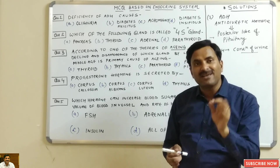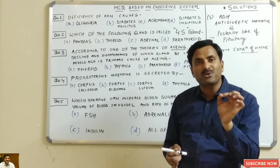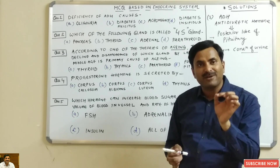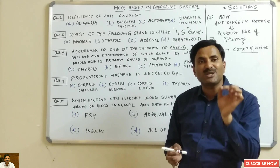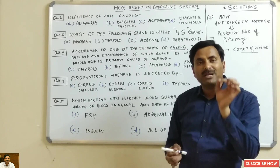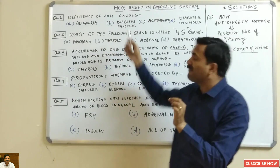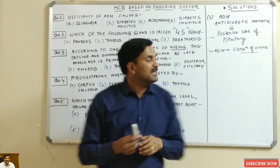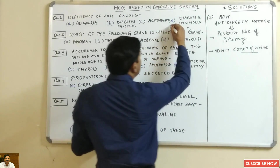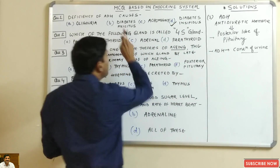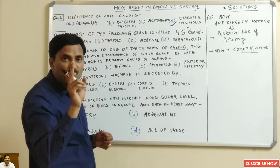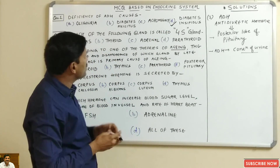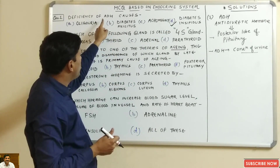In that case, the person suffers from a disease known as diabetes insipidus. Note that we are not talking about diabetes mellitus — diabetes mellitus is caused by deficiency of insulin. Here, deficiency of ADH causes diabetes insipidus, not diabetes mellitus.